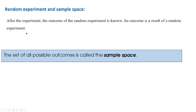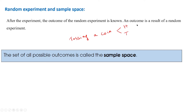Here, what is this outcome? An outcome is nothing but the result of a random experiment. It is only after the experiment that the outcome of the random experiment is known. For example, when we toss a coin, after tossing we know whether we are going to get a head or a tail. So an outcome is a result of a random experiment.